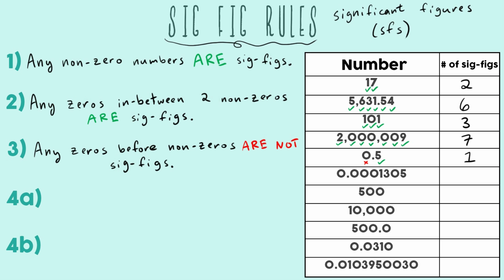For 0.0001305, we can immediately check off all our non-zeros: 1, 3, and 5 are all SIGFIGs. The zero in between 3 and 5 is a middle zero — that's rule 2, so it counts. Rule 3 applies to every single zero before the first non-zero one: those four leading zeros are all not SIGFIGs. So the total number of SIGFIGs this number has is four — it's the last four digits.